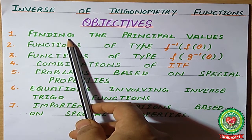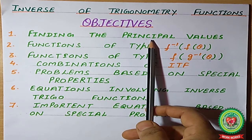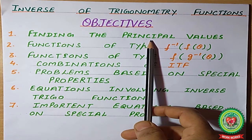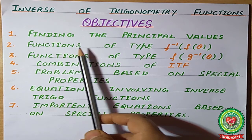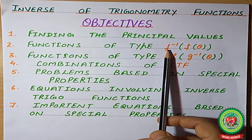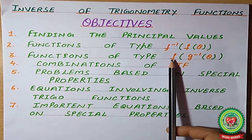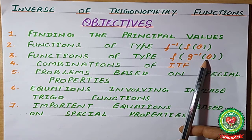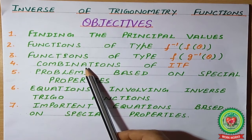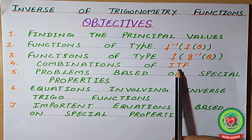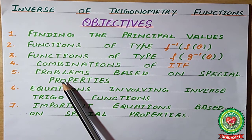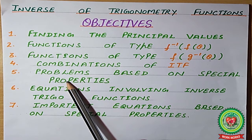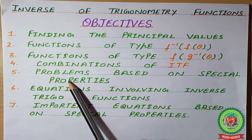First, we have learnt how to find out the principal values for an inverse function. Then we learnt how to solve the functions when the type is f-inverse(f(θ)) or f(g-inverse(θ)). Then we learnt the combinations of ITF, the special properties, and problems based on those special properties.